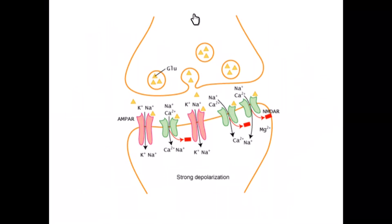Here we've got glutamate being released from the presynaptic neuron, binding with the receptor sites — the NMDA receptor — on the postsynaptic neuron. What this will do is open up the channels for deposits of charged ions such as calcium and sodium to enter the postsynaptic neuron.